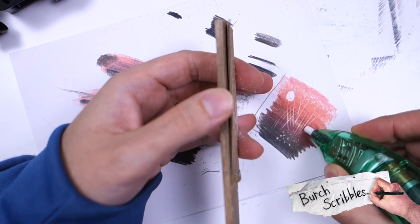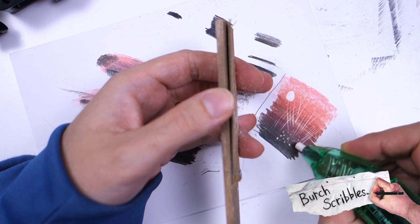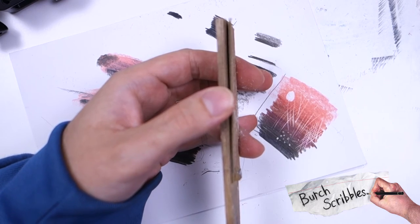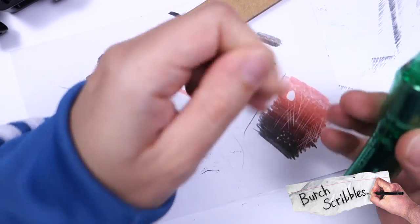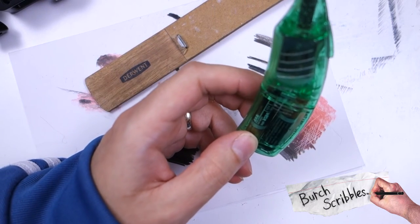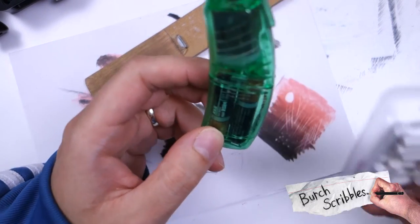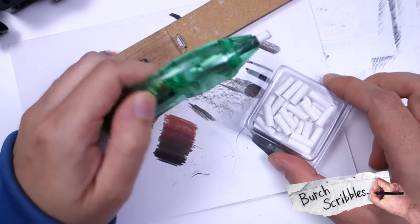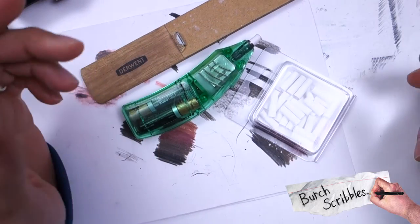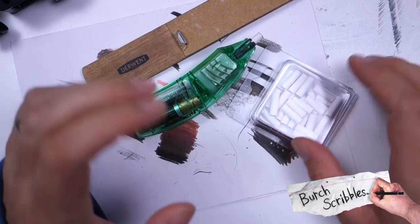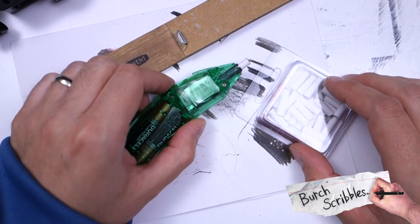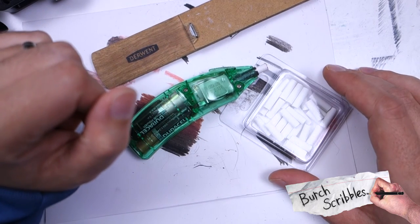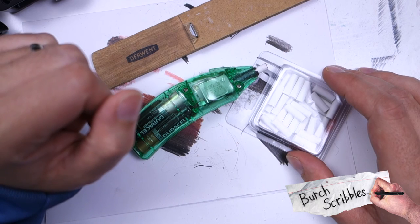As you can see, very useful. So have a go, get yourself an electric eraser and get yourself some of these. These are really cheap as well, you can get them both on Amazon. It's absolutely brilliant. I'd highly highly recommend that you use an electric eraser. Look out for the next quick tips video and yeah, I'll see you next time.